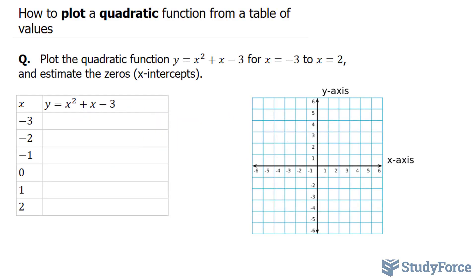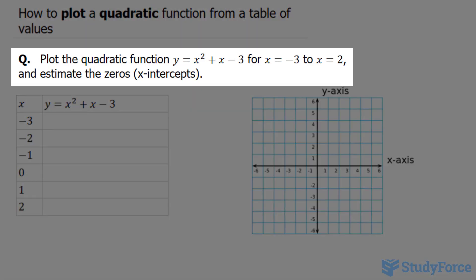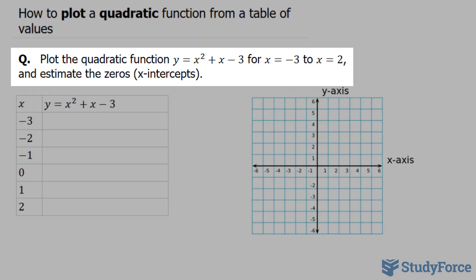In this video, I'll show you how to plot a quadratic function from a table of values. The question reads: plot the quadratic function y equals x squared plus x minus 3 for x equals negative 3 to x equals 2, and estimate the zeros, the x-intercepts.